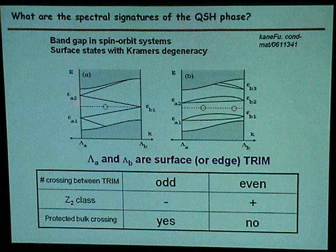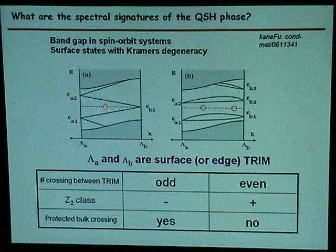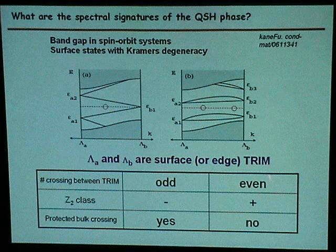If you look at this, and you want to evaluate this number, what matters in their theory is whether this number is odd or even. I'm saying that unlike Bismuth, this number is odd. Bismuth satisfies this part.